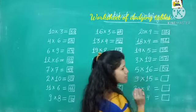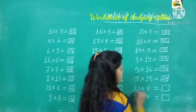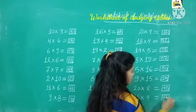9 fifteens are. 9 ko 15 se karenge 135. 20 twos are 40. Or 16 fours are 64.